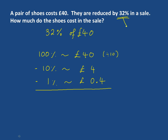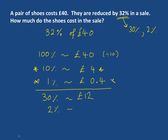To find 32%, we want 30% and we want 2%, because that's 32%. So 30% is 3 of these 10%. So 3 of these £4 will give us £12. So 30% is £12. Now we'll find the 2% — 1% is 0.4, so 2 of them, two 1%s, will be 0.8.